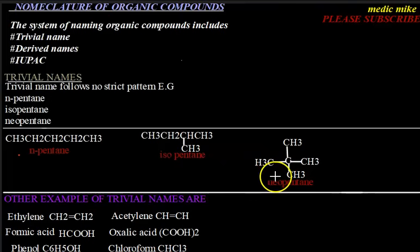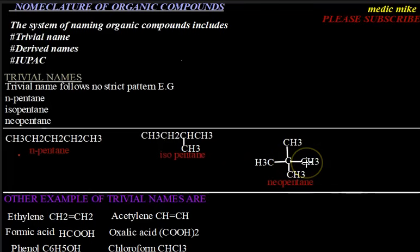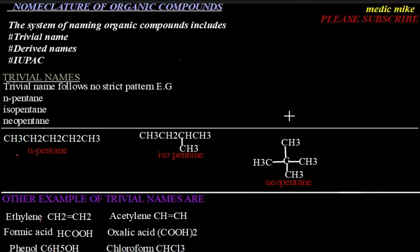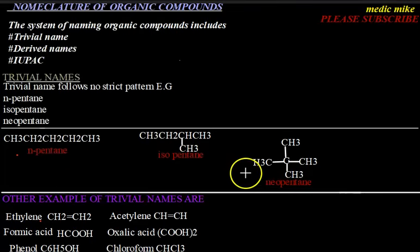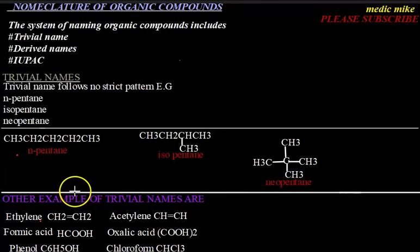We also have neopentane, which has a central carbon atom with an alkyl group — specifically an ethyl group — added to the four carbon bonds at that central carbon. So in summary, it is either n-alkane, iso-alkane, or neo-alkane, depending on how the structure looks.